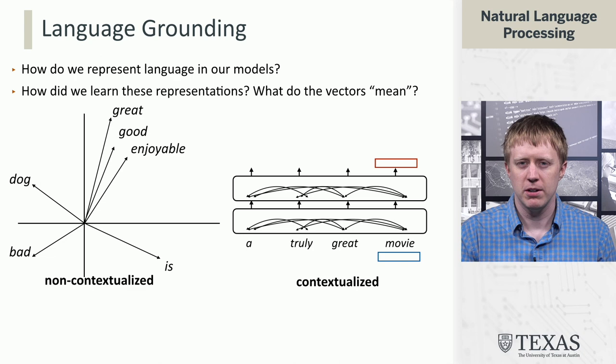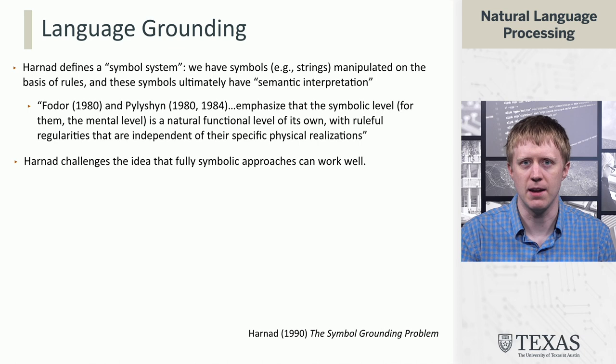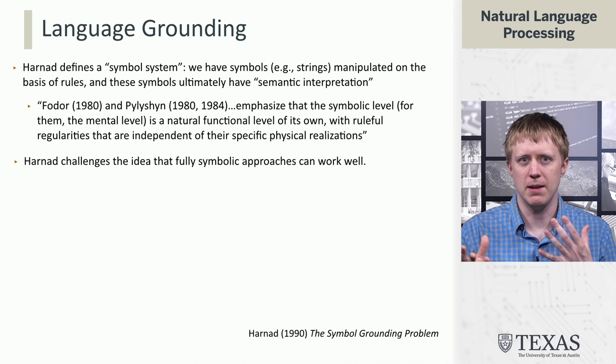But what do these vectors really mean? This is a deep philosophical question that has a long history in NLP and AI more broadly. It goes back to some work from Harnad called The Symbol Grounding Problem, where Harnad defines a symbol system — basically a system that can manipulate strings on the basis of rules.